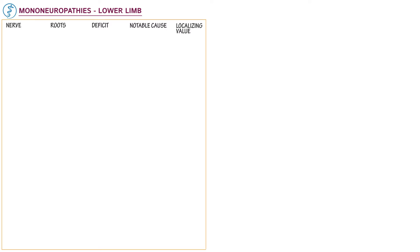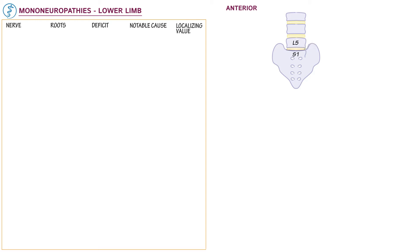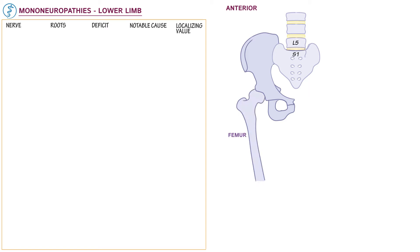Draw an anterior view of the lower lumbar vertebral column and sacrum. Specify the L5-S1 junction, a clinically important level for disc herniation — here the vertebral column angles abruptly posteriorly. Then draw the right pelvic bone, the femur, and then the inguinal ligament.